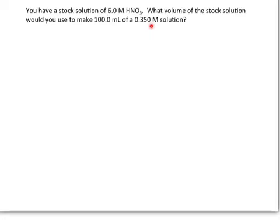So the equation that we want to use to solve these problems is M1V1 is equal to M2V2. And so the way this equation works is M1 and V1 are the concentration and the volume of the stock solution, and M2 and V2 are the concentration and volume of the final diluted solution.